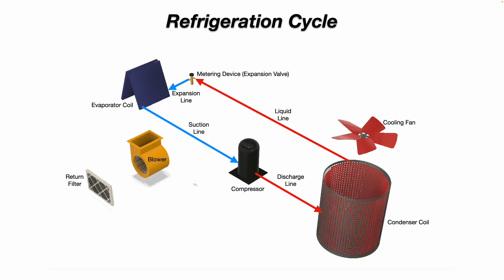The condenser cooling fan is going to dissipate that heat energy out of the condenser to the open atmosphere. The refrigerant is going to change state about halfway through the inside of the condenser coil, and then it leaves as a high-pressure liquid on the liquid line going into the metering device or expansion valve, where it expands and quickly reduces in pressure and temperature.